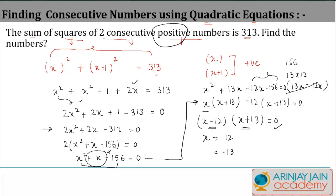But you were told in the beginning that these two integers are positive, so since -13 is negative we will ignore this value and take x = 12. If x = 12, the second number we had was x + 1, so the second number is 13.